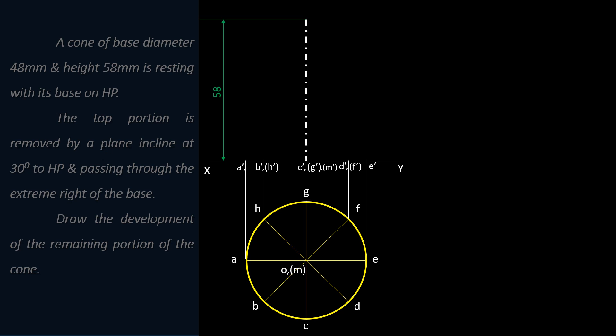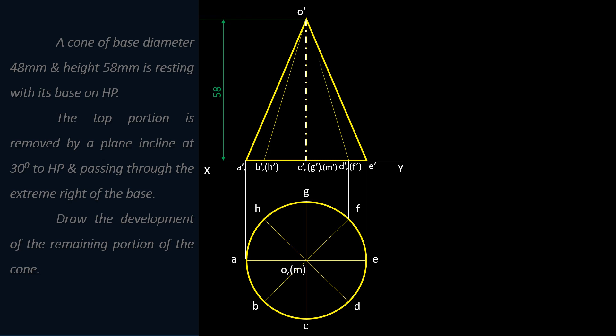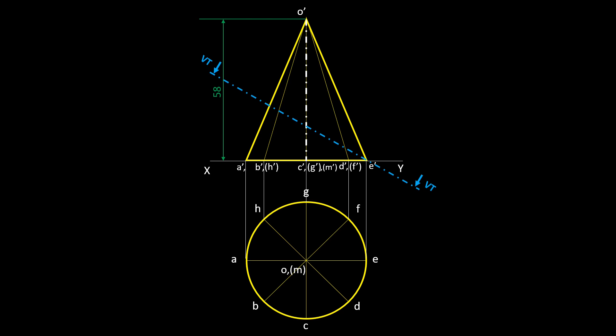The axis height is 58mm. Draw the front view. Now locate the section plane, which passes through the extreme right of the cone and is inclined at 30 degrees to HP. Mark the trace of the section plane as VT. Locate the section points on the generator of the cone, moving along the section plane.